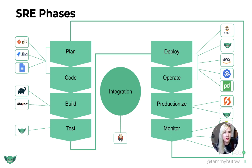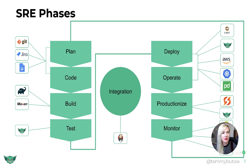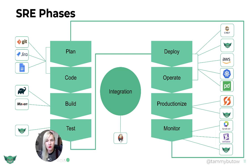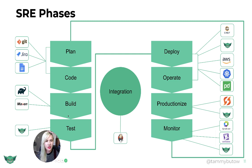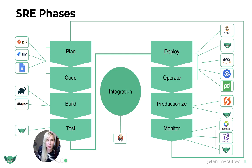Then we can go over to deploy. Deploy and operate actually has a lot of different tools — Chef, Gremlin, AWS, Kubernetes, PagerDuty. Then we want to productionize our software. This is where we're doing testing in production, making sure that what we have in production works as expected. Here we might be using software like FireHydrant for incident management, Gremlin for chaos engineering in production, and then we move on to monitor, where we might be using something like Dynatrace or Datadog — also very popular — and Gremlin, to help make sure that your monitoring works as expected.